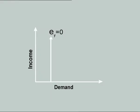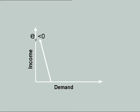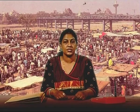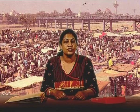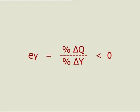Zero Income Elasticity: any change in income does not affect the quantity demanded of a particular product at all. The demand for such a product is zero income elastic — symbolically EY = (% ΔQ) / (% ΔY) = 0. Negative Income Elasticity: when a rise in consumer income actually reduces the demand for a particular product, such a product is said to have negative income elastic demand. Usually, inferior goods (i.e., Giffen goods) are negatively income elastic. When consumers of such products experience a rise in income, they tend to purchase less of the inferior goods and shift towards superior goods — symbolically EY = (% ΔQ) / (% ΔY) < 0.